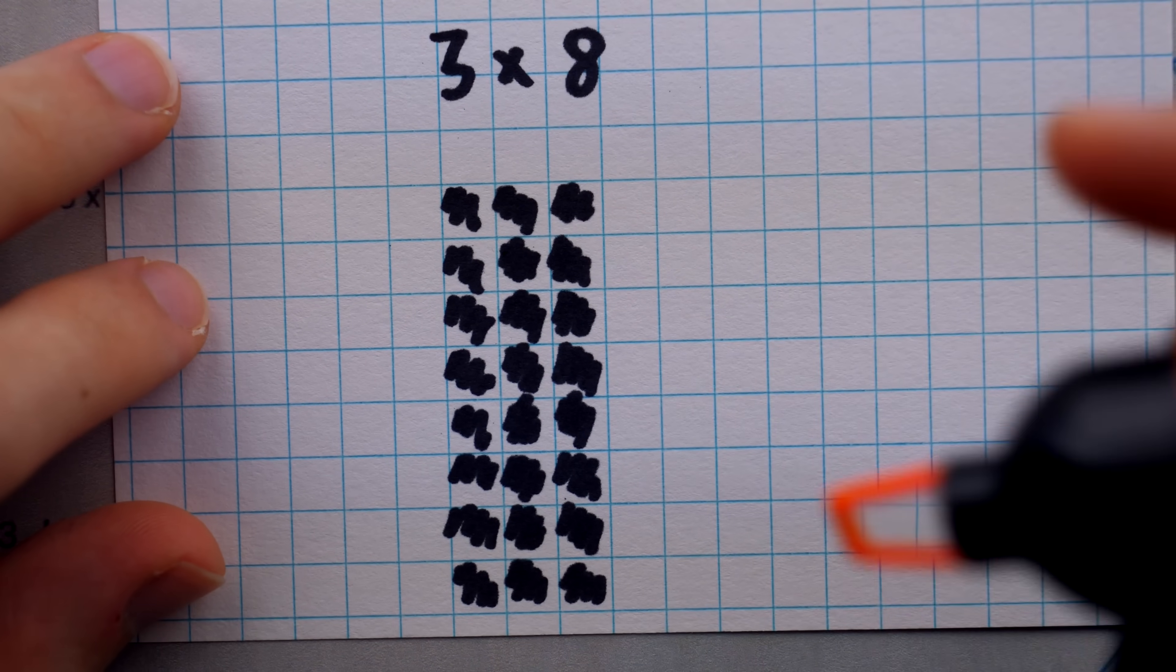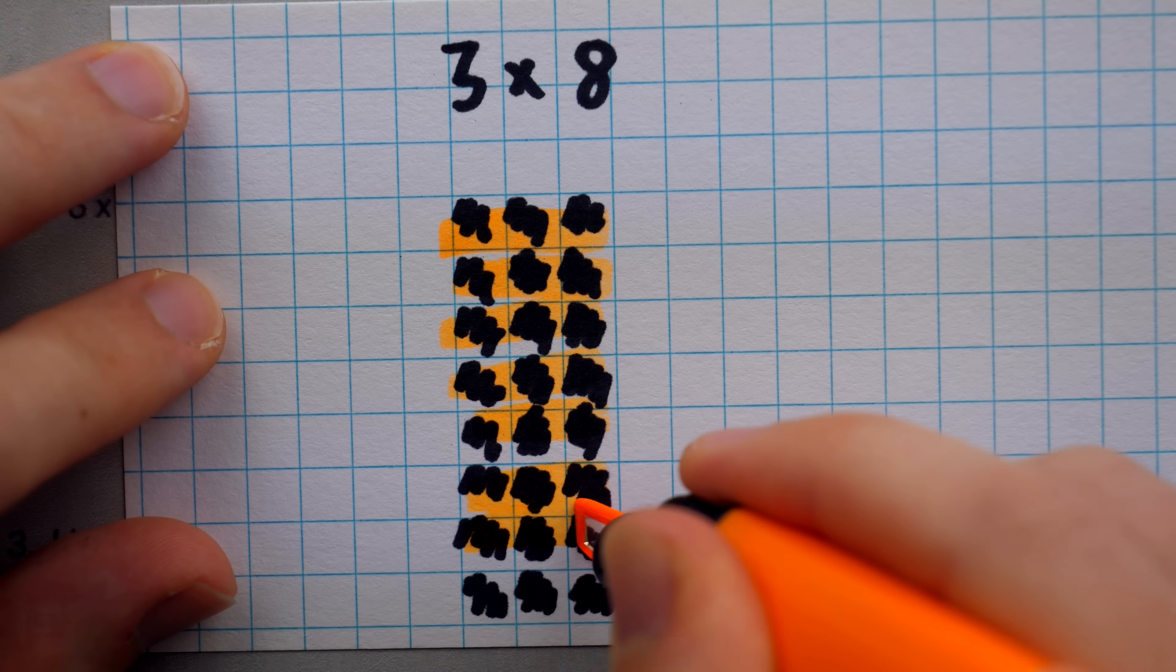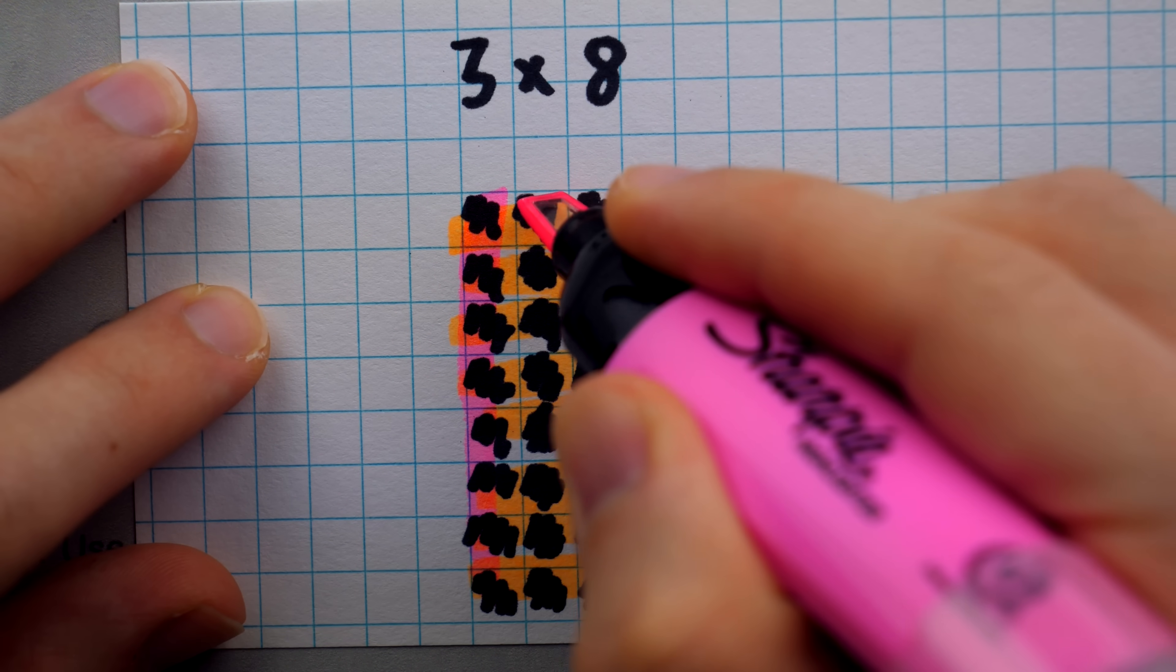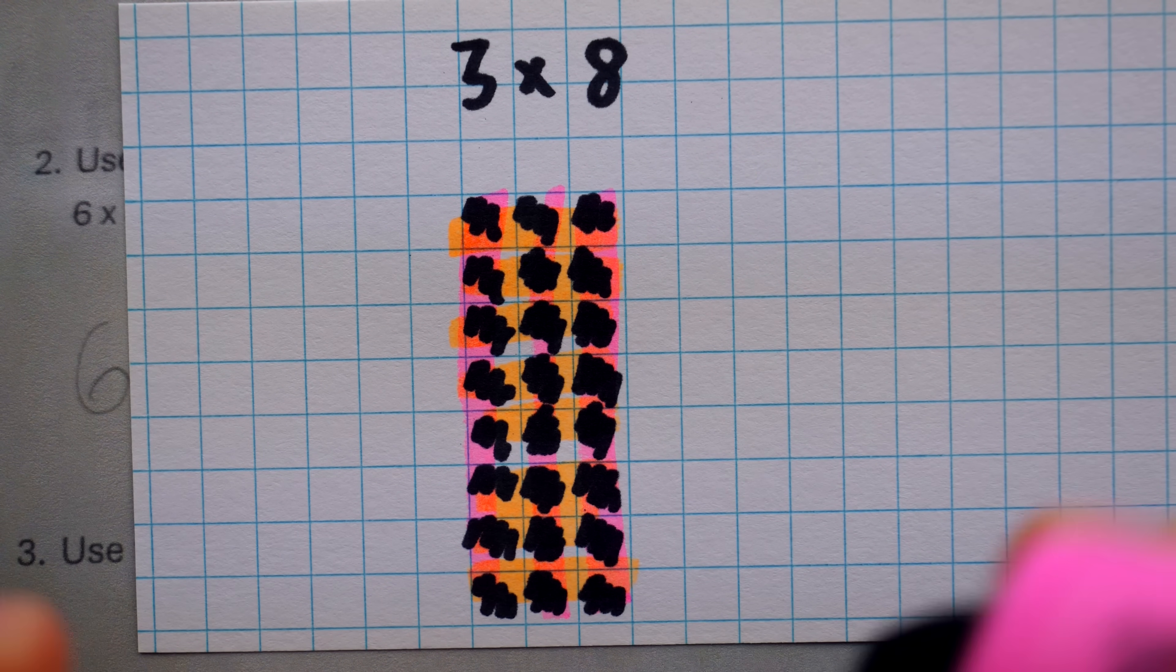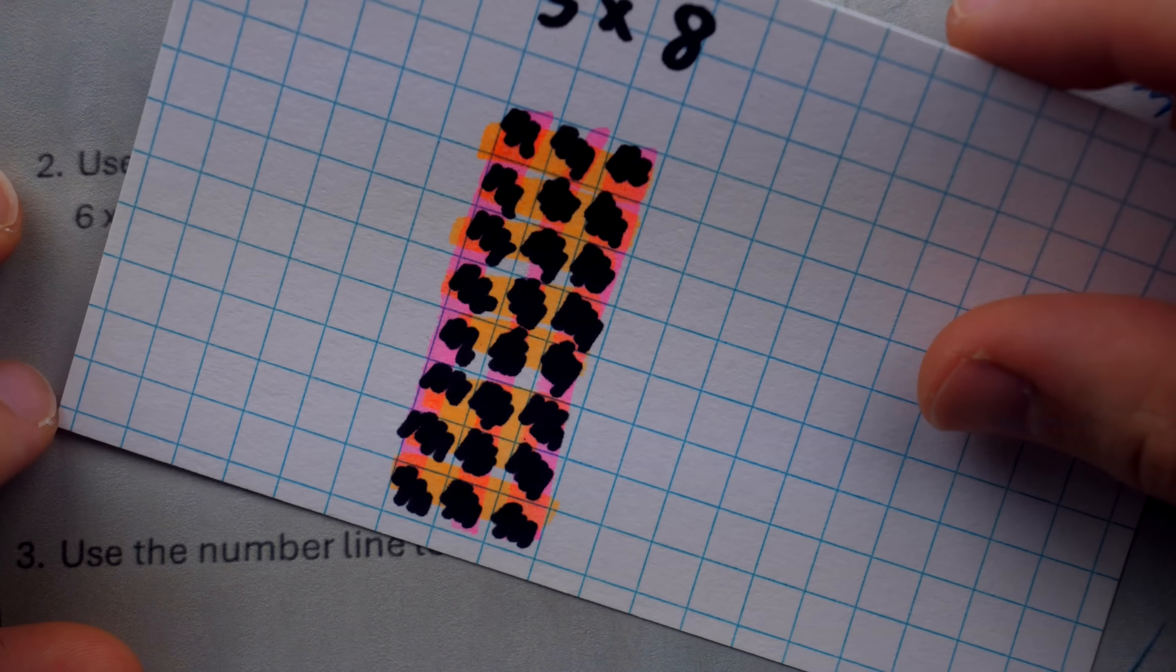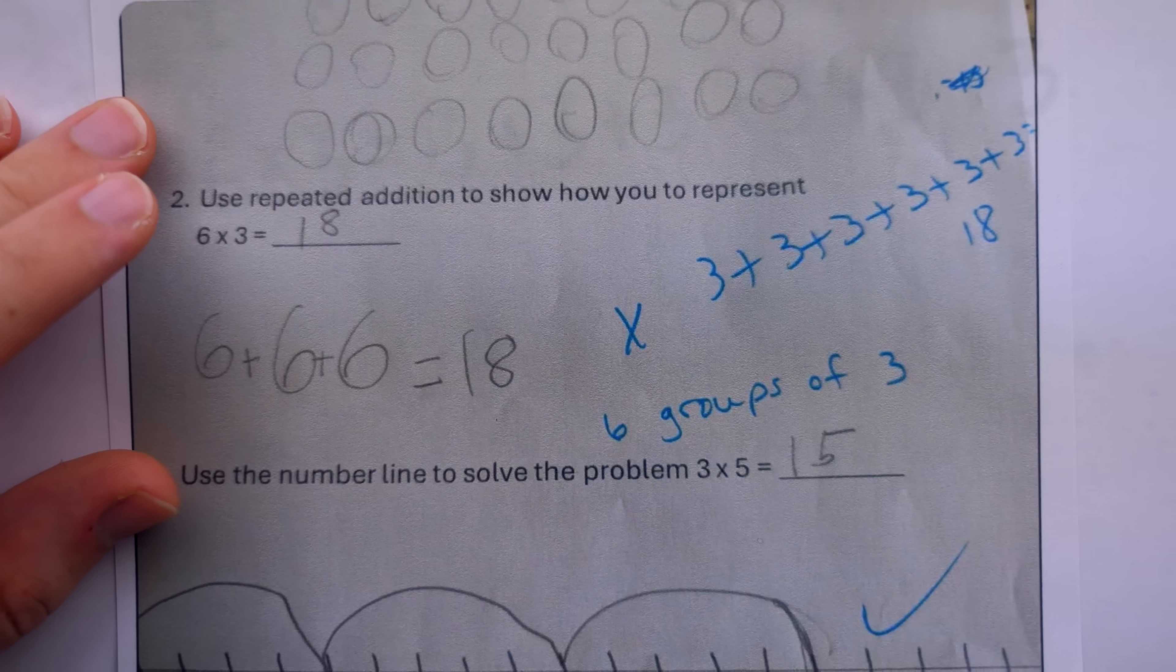This looks to be representing 3 times 8. I can't help but wonder how the conversation would go if the student said, OK, 3 times 8, so we've got 8 and 8 and another 8. And the teacher says, no, Daryl, that's all wrong. You've drawn out 8 groups of 3 when you were supposed to draw 3 groups of 8. And Daryl says, no, look, I did do 3 groups of 8. How do you settle that dispute?